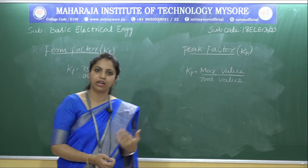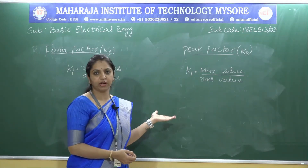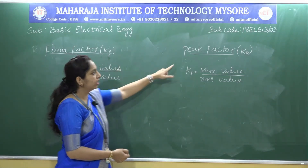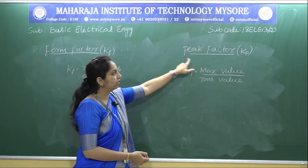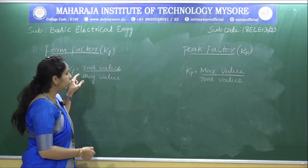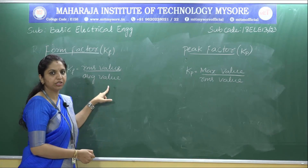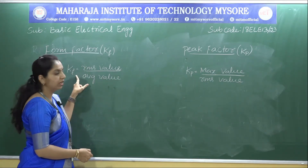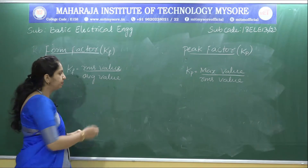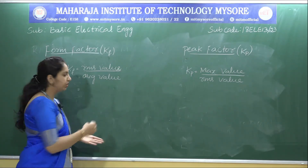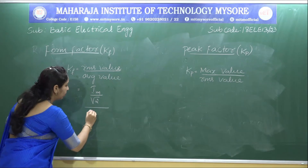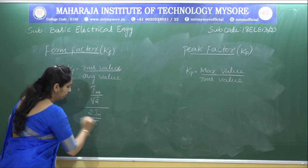Based on the RMS and average value equations, we define two more factors: form factor, denoted K_f, and peak factor, denoted K_p. Form factor is defined as the ratio of RMS value to average value. So K_f = I_RMS / I_avg = (I_M/√2) / (2I_M/π). The I_M terms cancel, giving a constant value of 1.11. Form factor is always 1.11.